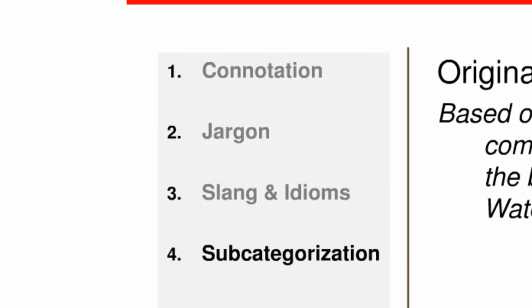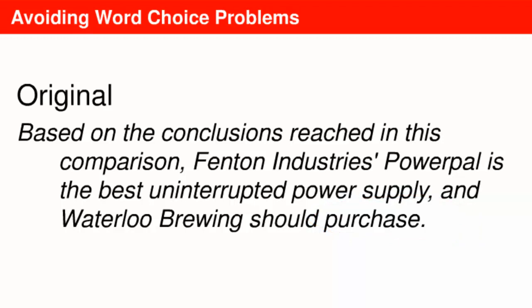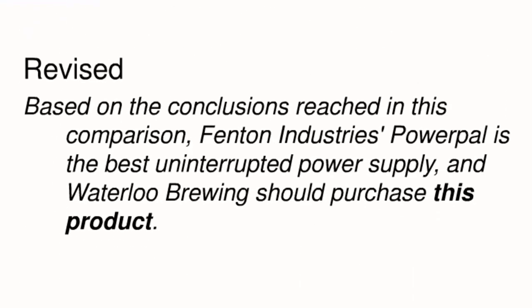The fourth source of word choice problems is subcategorization. We'll focus on one subcategory of English verbs requiring a noun as direct object — that means they're categorized more specifically as transitive verbs. In the original sentence, the verb 'purchase' appears without a direct object, which creates a subcategorization problem. Business readers are likely to notice something sounds funny and make attributions about the writer's knowledge of English or professionalism, which distracts the reader from the content of the message and creates inefficiency. In the revised version, the writer provides the direct object and avoids the problem and, most importantly, the distraction.